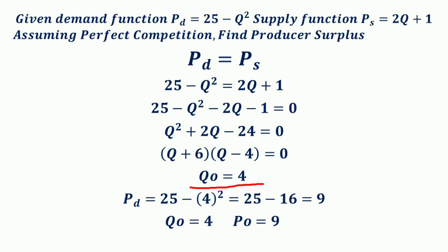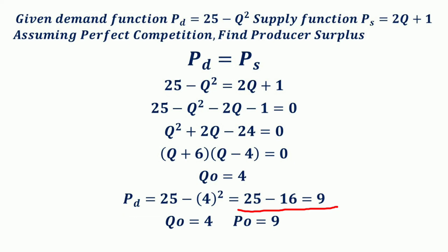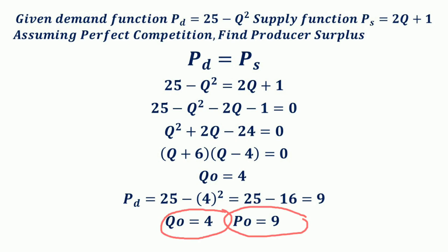Since the equilibrium quantity Q0 = 4, substituting into the demand function gives: PD = 25 − 4² = 25 − 16 = 9. Therefore the equilibrium quantity is 4 and the equilibrium price is 9.